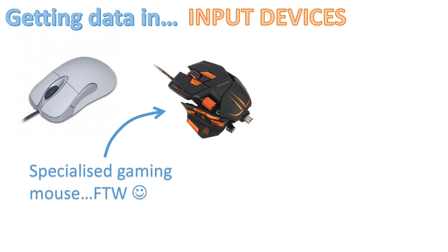Here is a specialized gaming mouse. As you can see, it looks quite different — there are added buttons and adjustable weights. Players can also adjust the DPI, which controls how sensitive the mouse is. When sniping in a game, you can lower the DPI so the cursor moves very little on screen even if you move the mouse a lot.